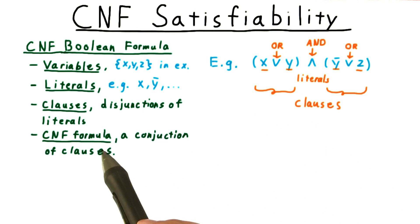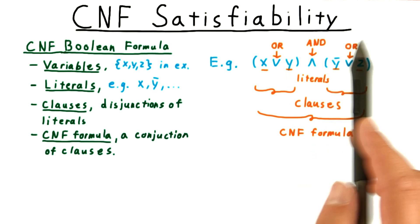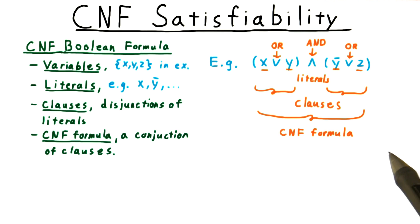And finally, we have the formula as a whole, which is a conjunction of clauses. That is to say, all the clauses get ANDed together. Thus, this whole formula is in conjunctive normal form. In general, there can be more than two clauses that get ANDed together. That covers the terms we'll use for the structure of a CNF formula.